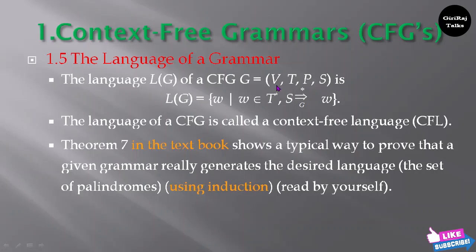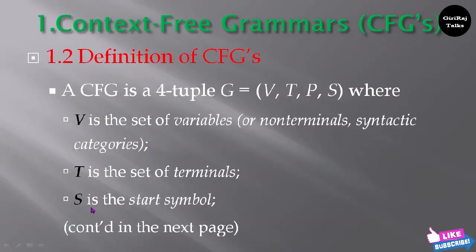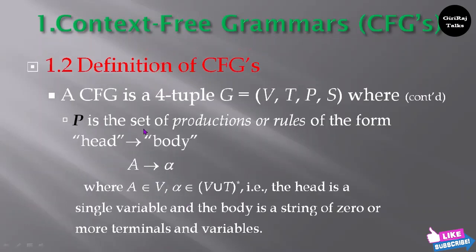V is a set of variables, T is a set of terminals, P is a set of productions, and S is the start symbol. S is the start symbol and P is the set of productions or rules from the grammar.